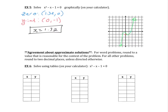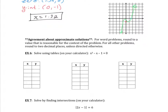For word problems, round to a value that's reasonable for the context — for example, you can't buy 1.32 boxes of Girl Scout cookies. For all other problems, round to two decimal places unless directed otherwise. Pay attention to rounding directions.